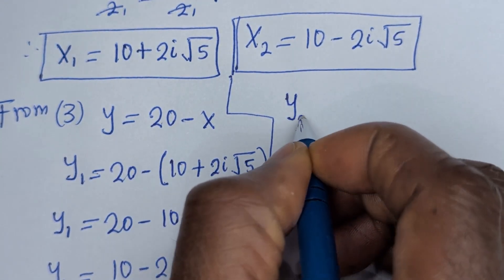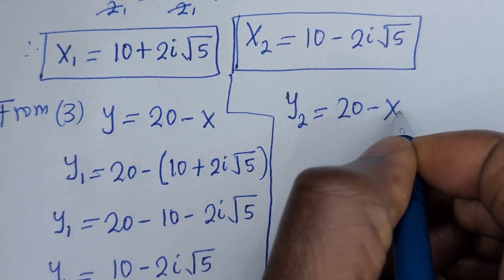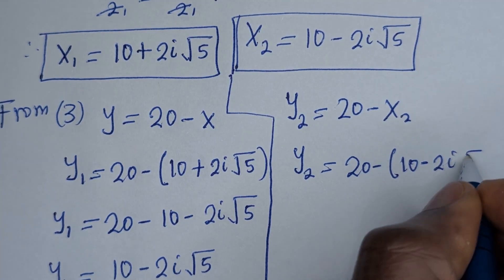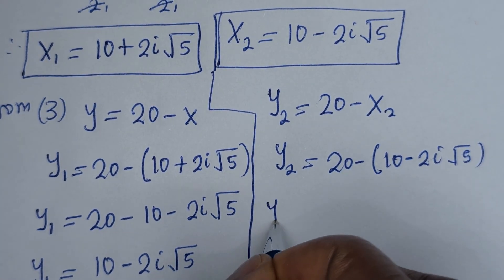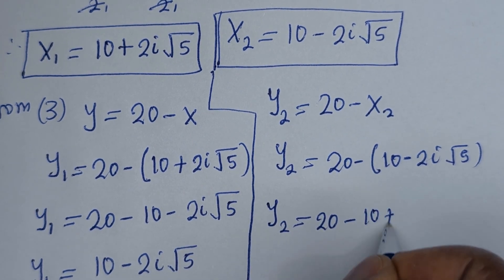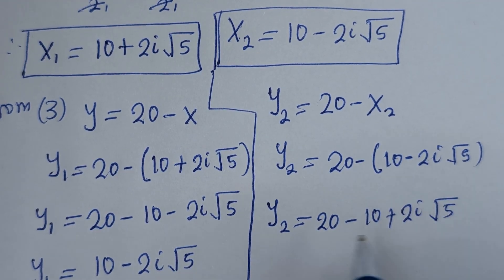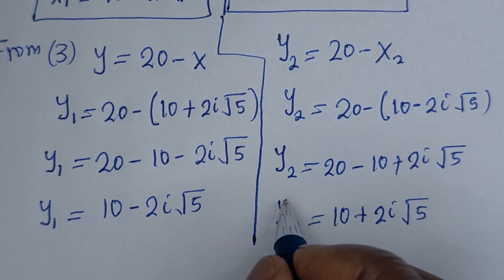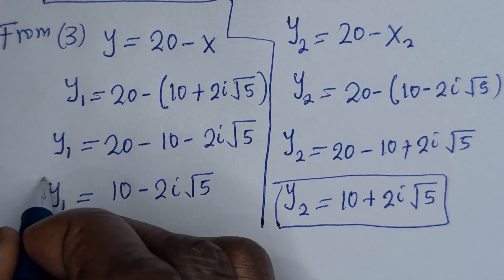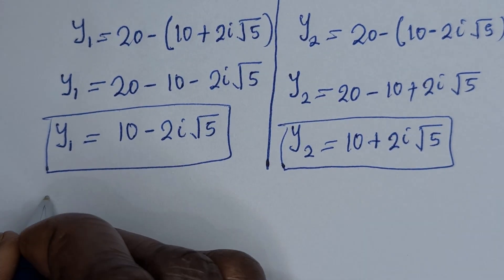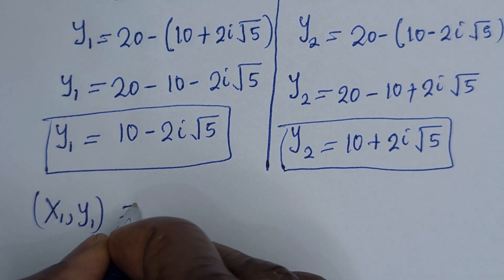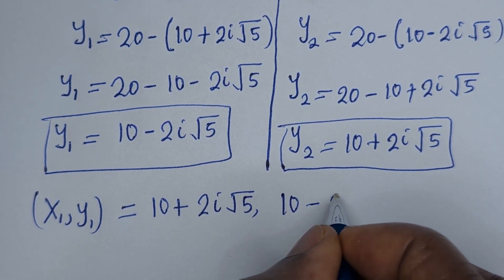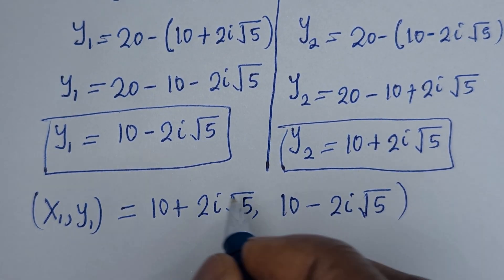Then, y2 is equal to 20 minus x2, which is 20 minus (10 minus 2i root 5). So y2 is equal to 20 minus 10 plus 2i root 5, which gives y2 is equal to 10 plus 2i root 5.